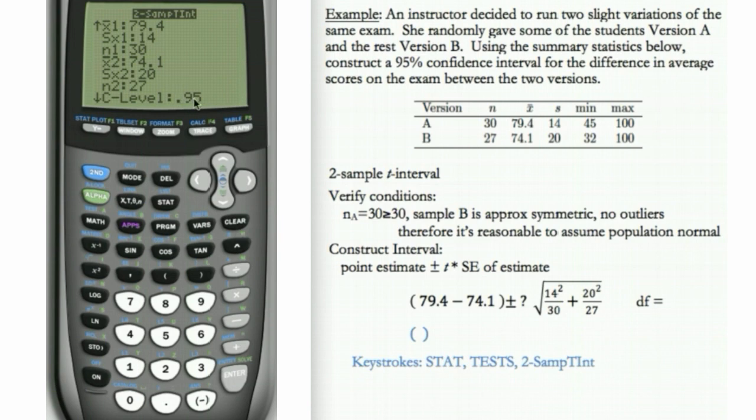Confidence level, we want 95%. So we'll leave this as 0.95. Always leave the pooled as no. We're not going to be pooling the standard deviations. And then do calculate and hit enter.